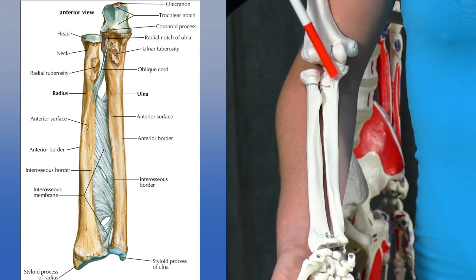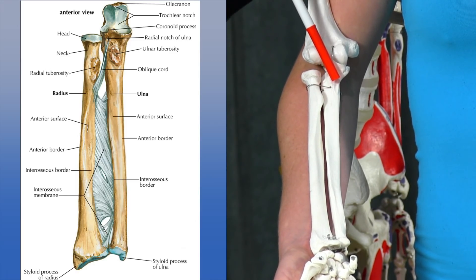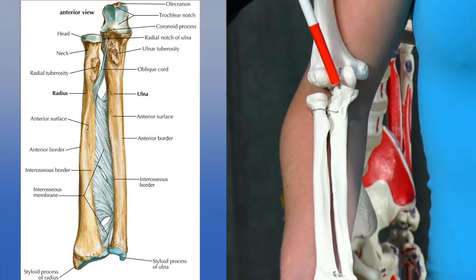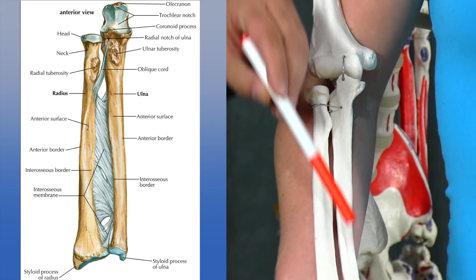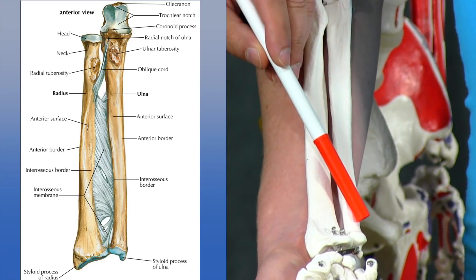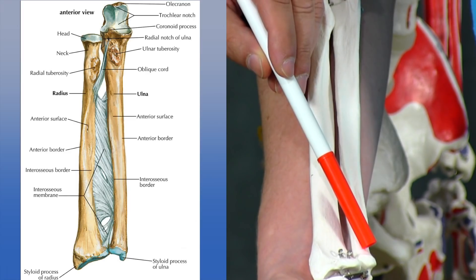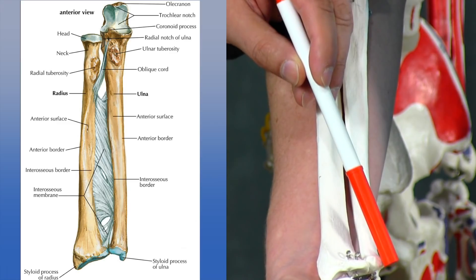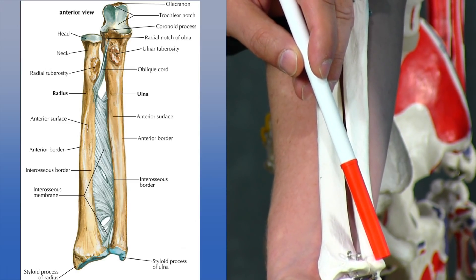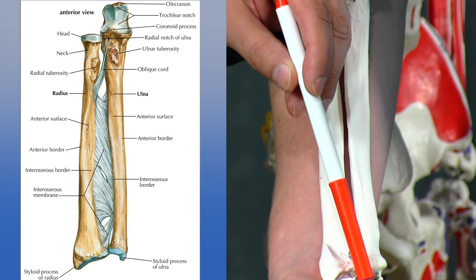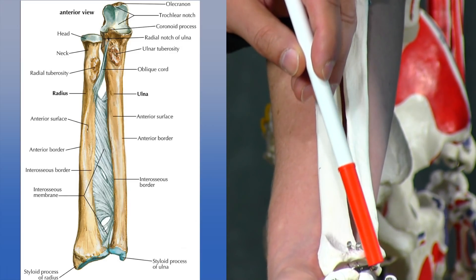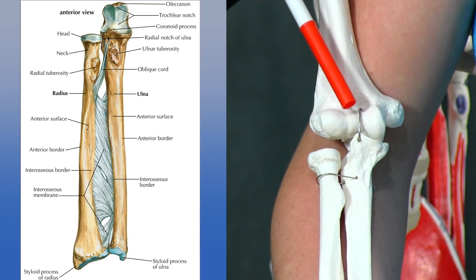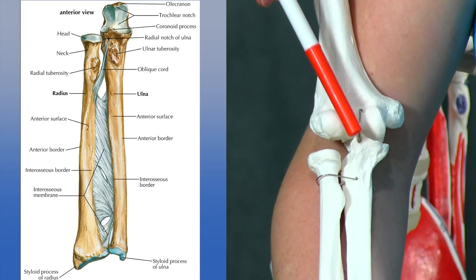Looking at the proximal ulna, it is quite large and has two processes: the coronoid process anteriorly and the olecranon on the back side. The distal ulna has an ulnar head and laterally a styloid process. Attached to the styloid process is a strong ligament that comes down and attaches into the bones of the wrist, connecting the ulna to the wrist.